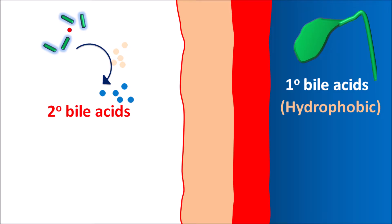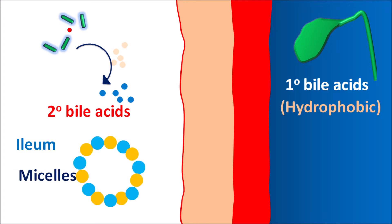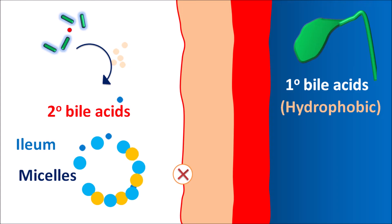At the ileum, these secondary bile acids act on micelles rich in cholesterol. Being hydrophilic in nature, secondary bile acids can interact with these micelles and dissolve the cholesterol, thereby reducing micellar formation. UDCA also interacts with cholesterol moieties so they are not easily absorbed through the intestine, reducing their intestinal absorption and thus decreasing the deposition of cholesterol into gallstones.